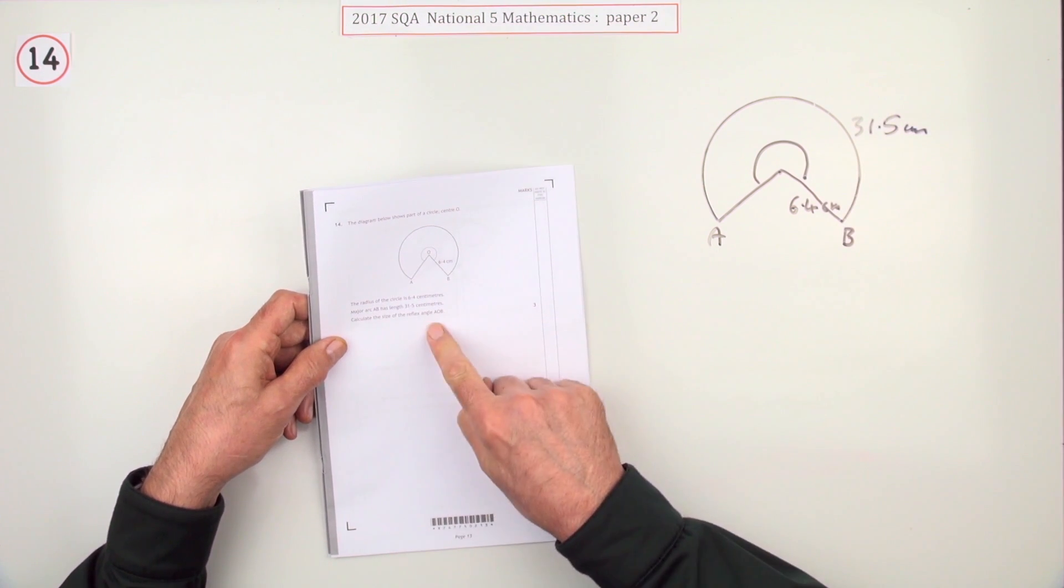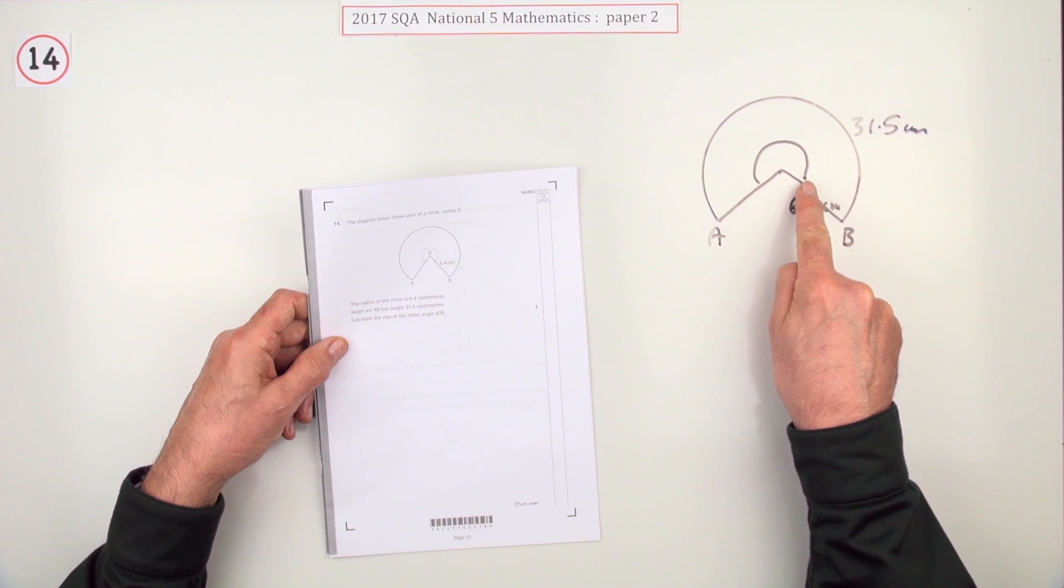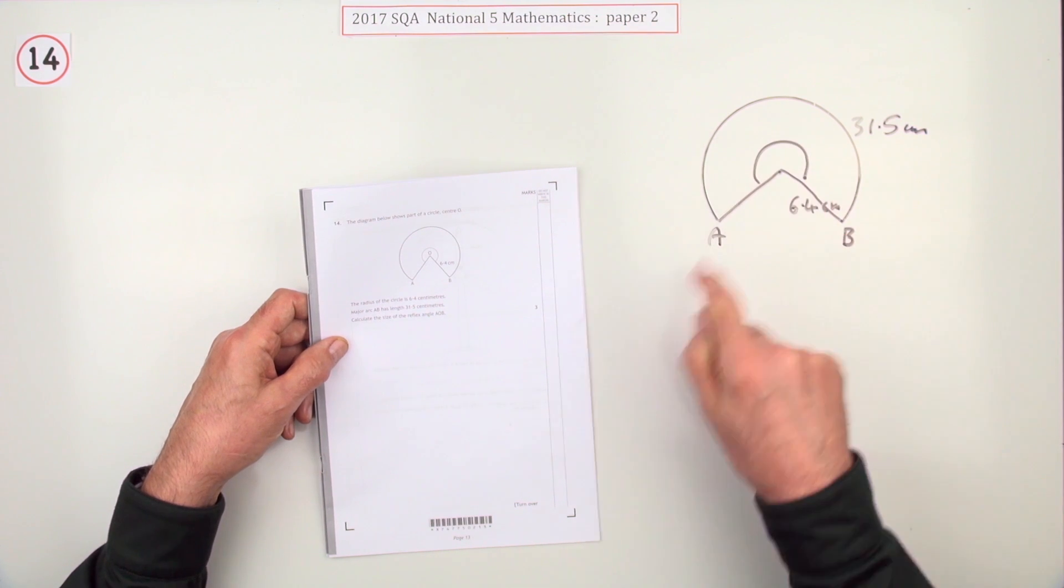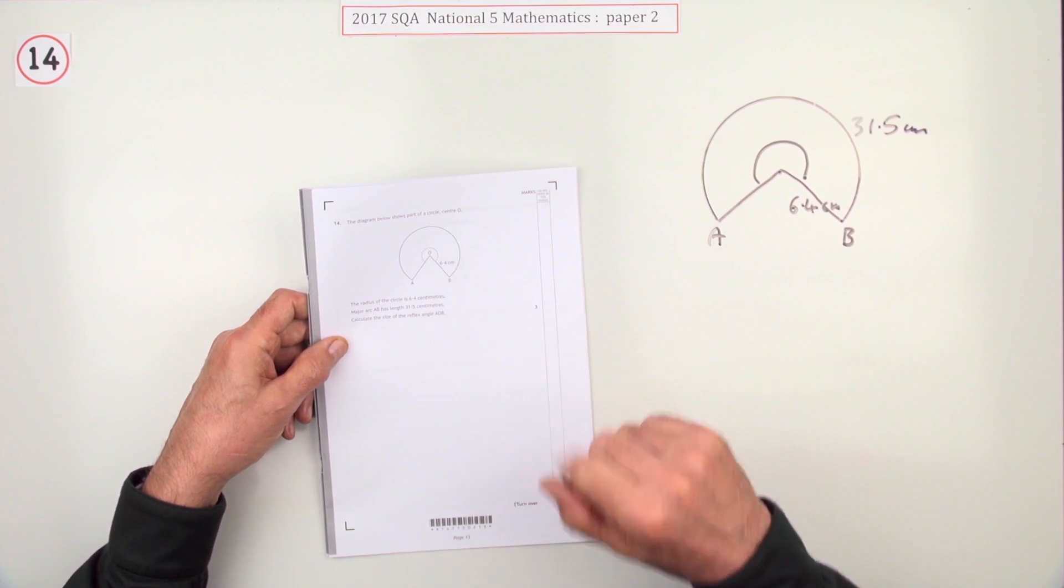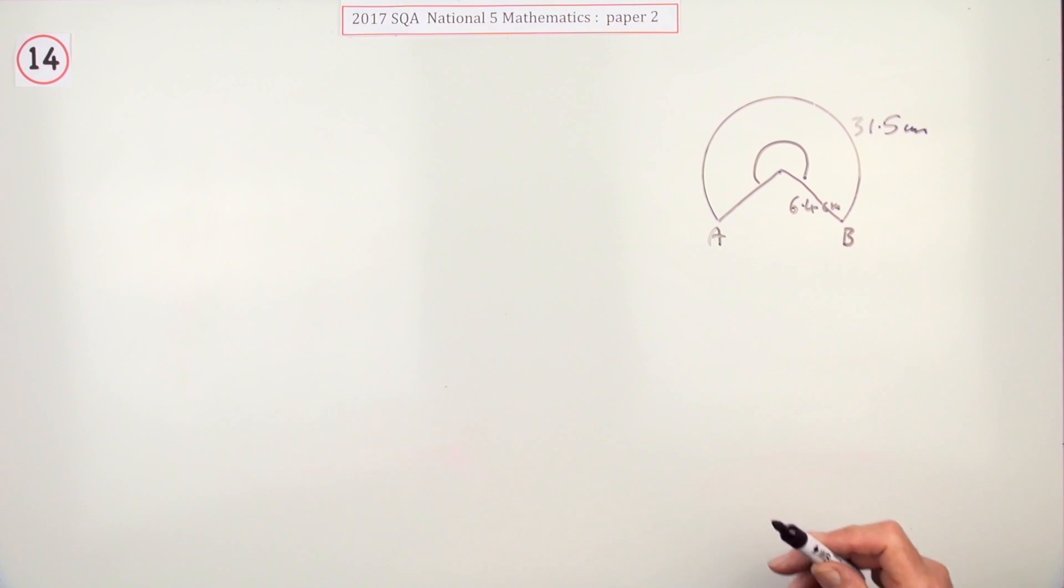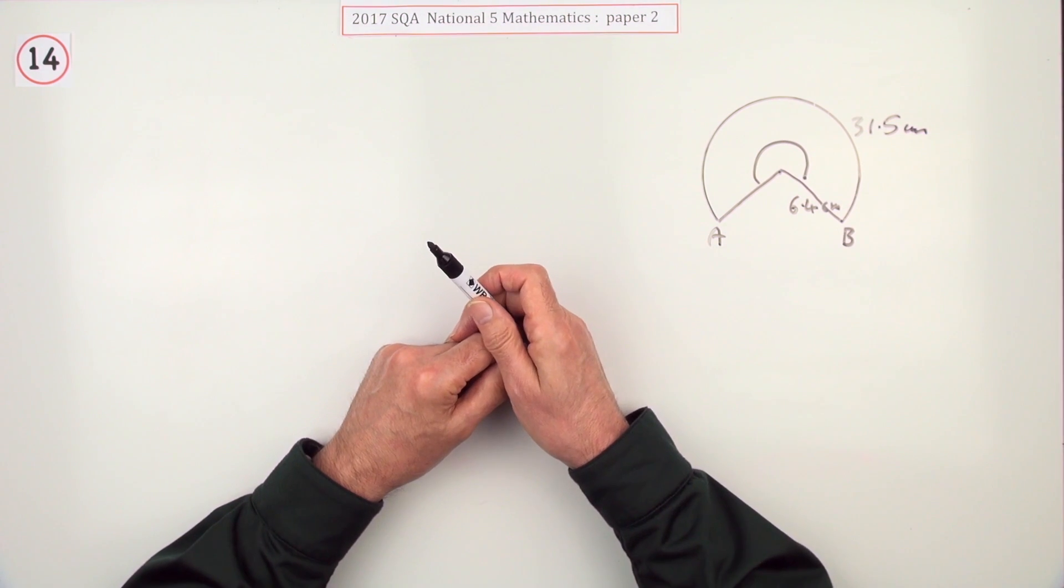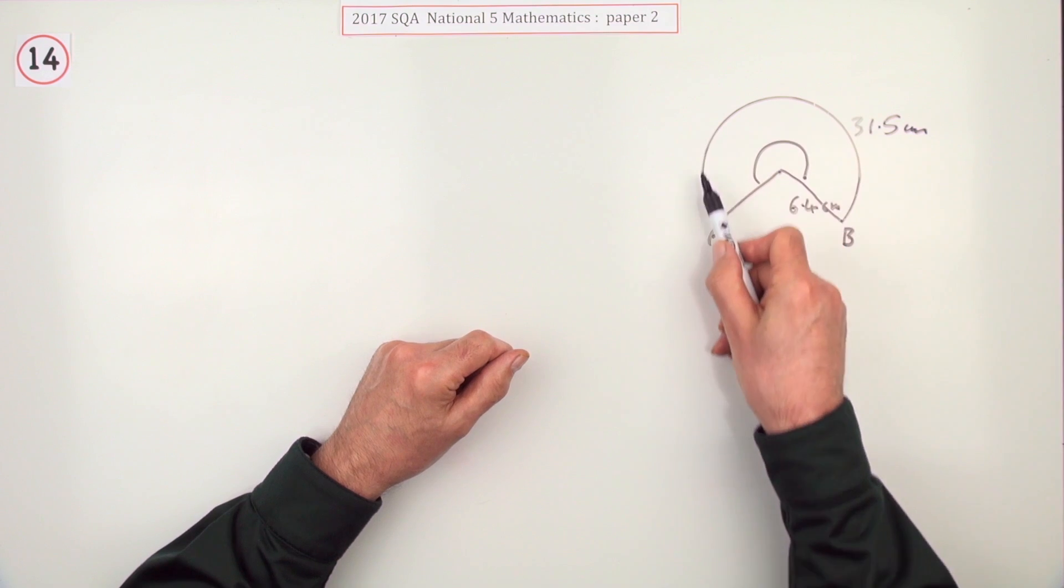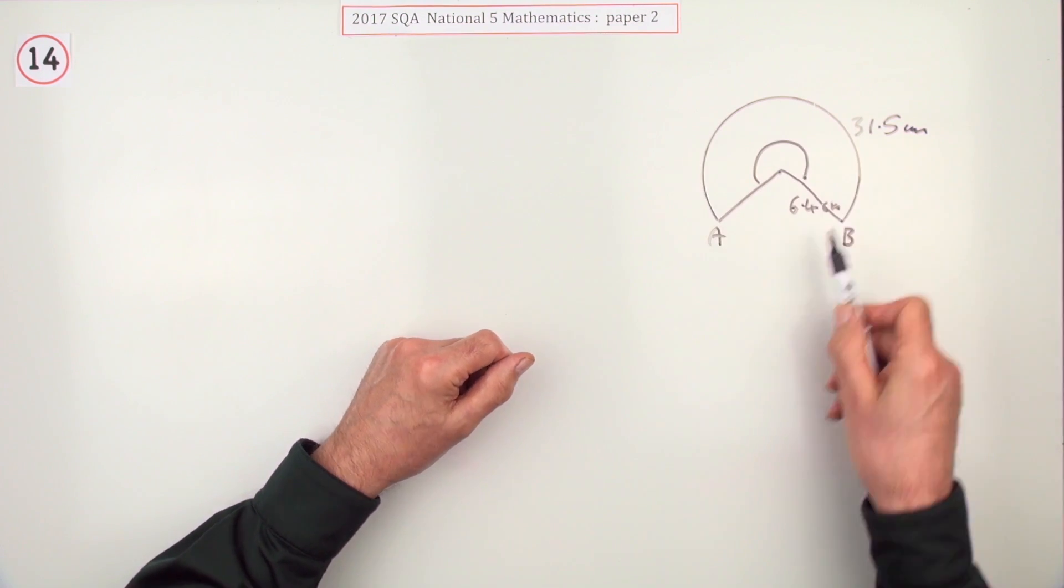From that you should be able to work out the size of the reflex angle, that's the angle that's more than 180 degrees. It's a fractions question, so you need to know what fraction of a circle you've got. Since it's the arc that you know, you'll need to know what the total arc would have been.